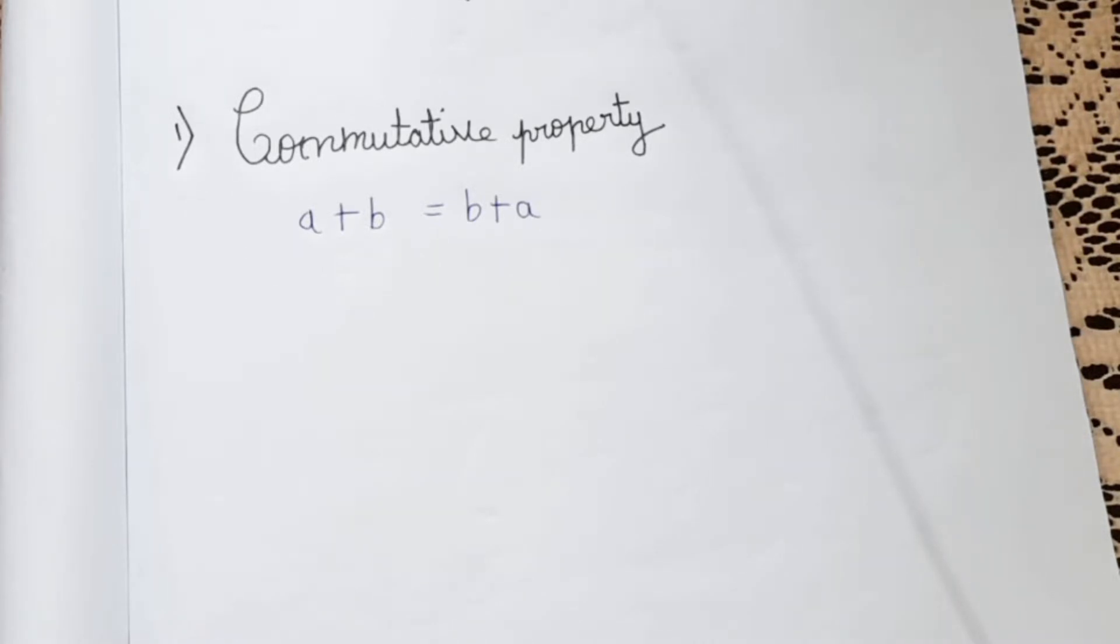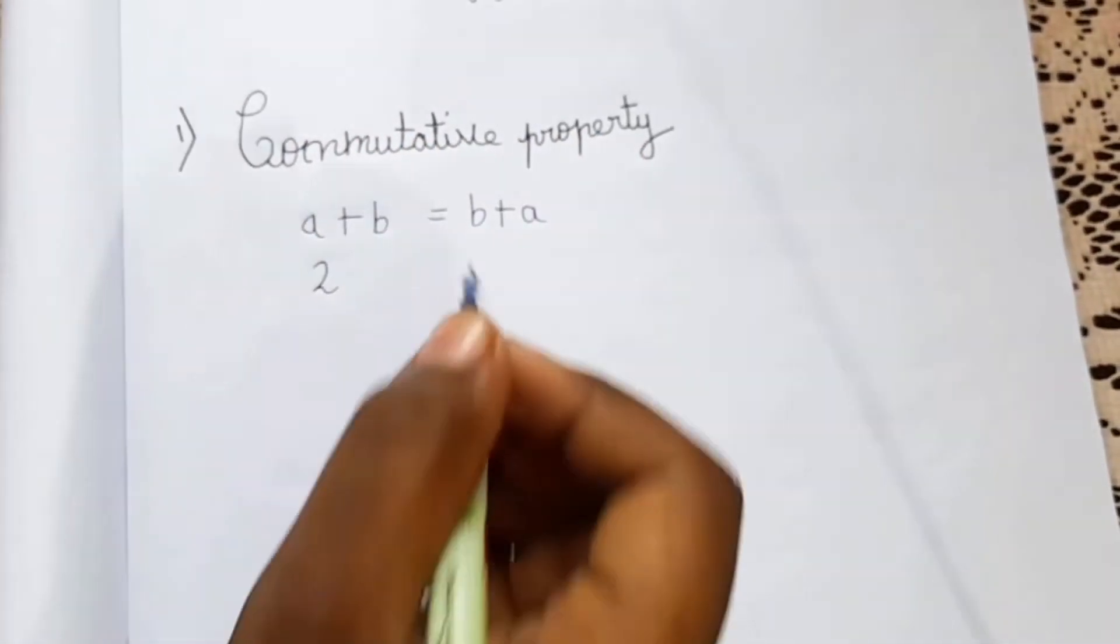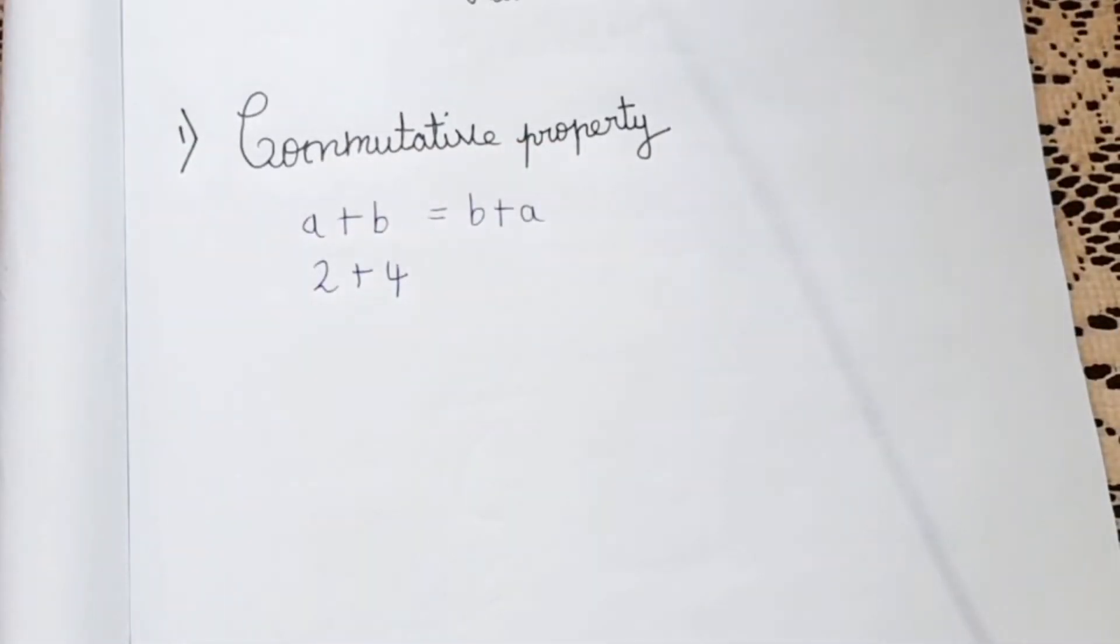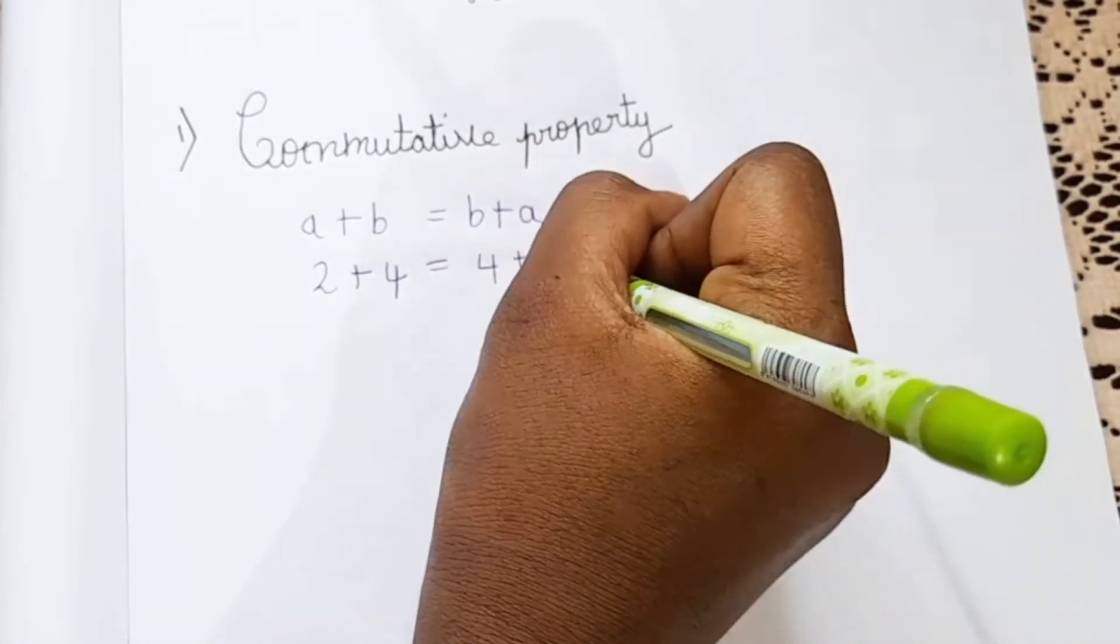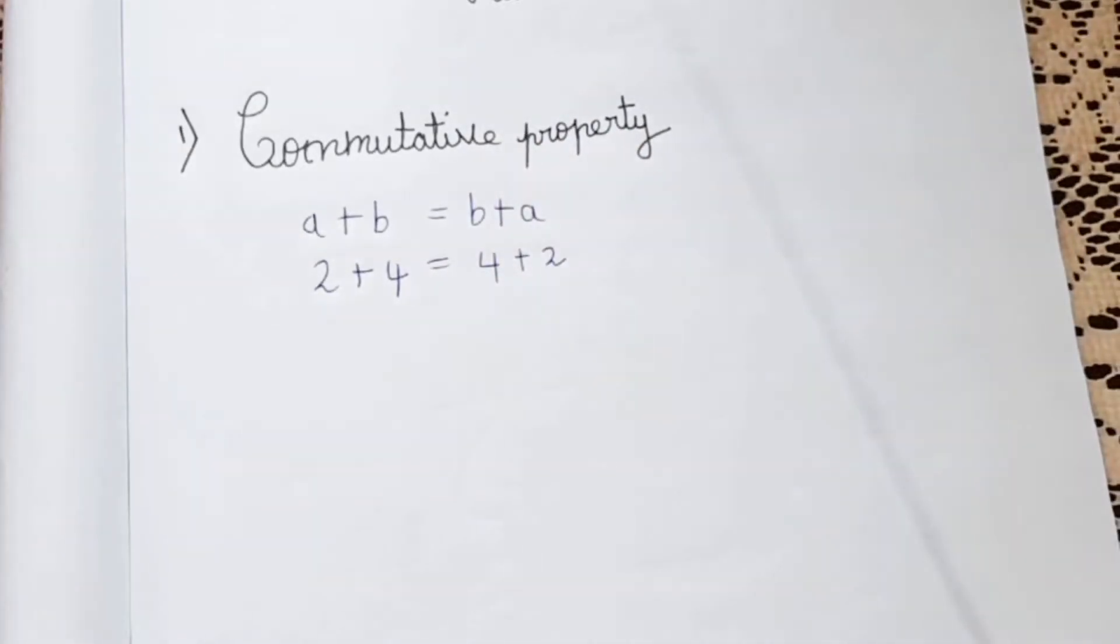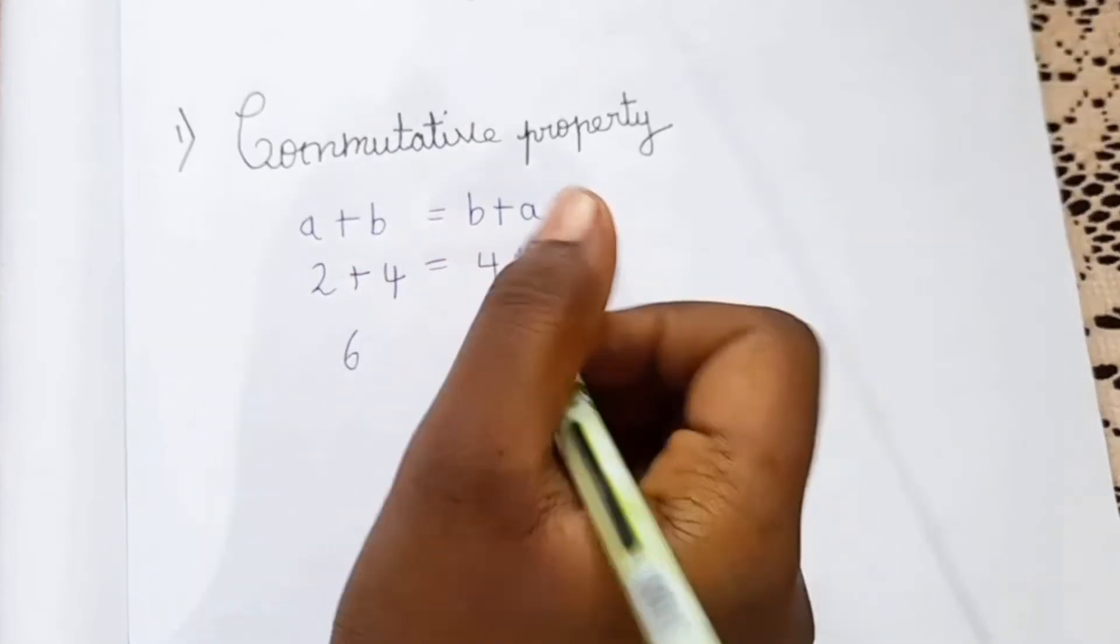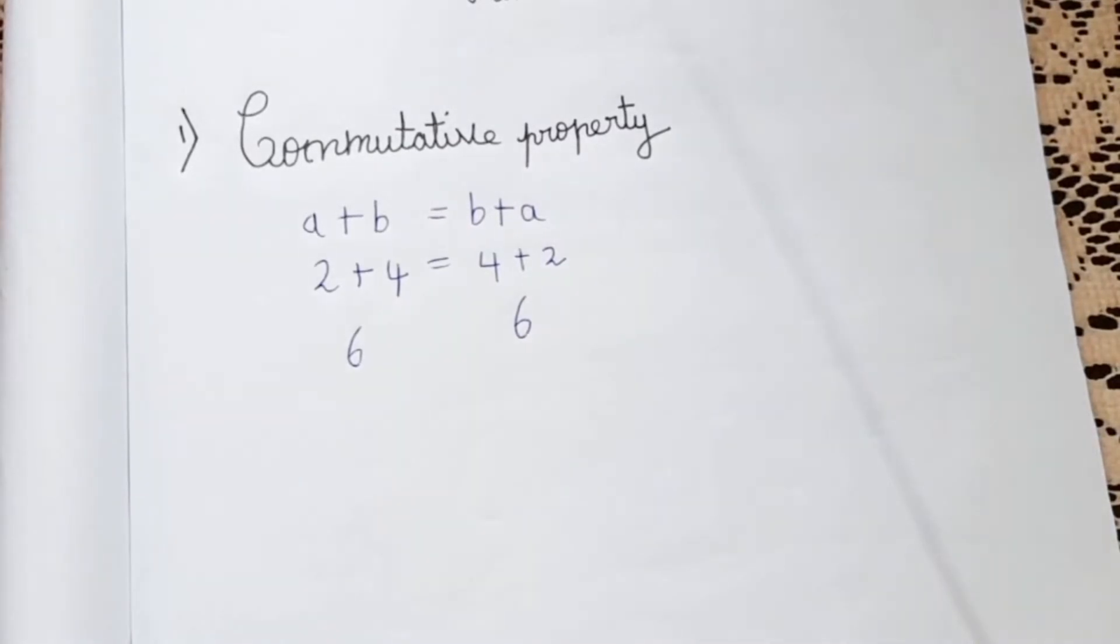So instead of a I'm taking 2 and instead of b I'm taking 4. So I can write 2 plus 4 as 4 plus 2. So if we write like this the answer is not gonna change. So let's add and check. 2 plus 4 is 6 and 4 plus 2 is also 6.